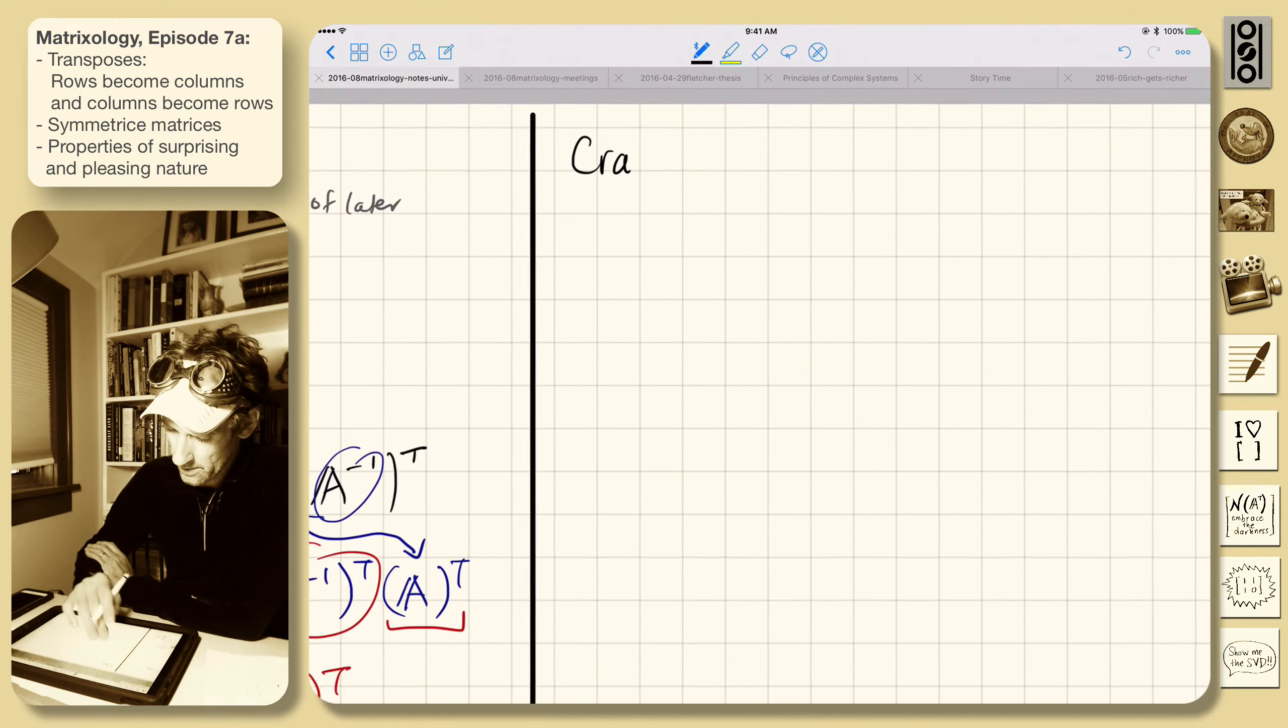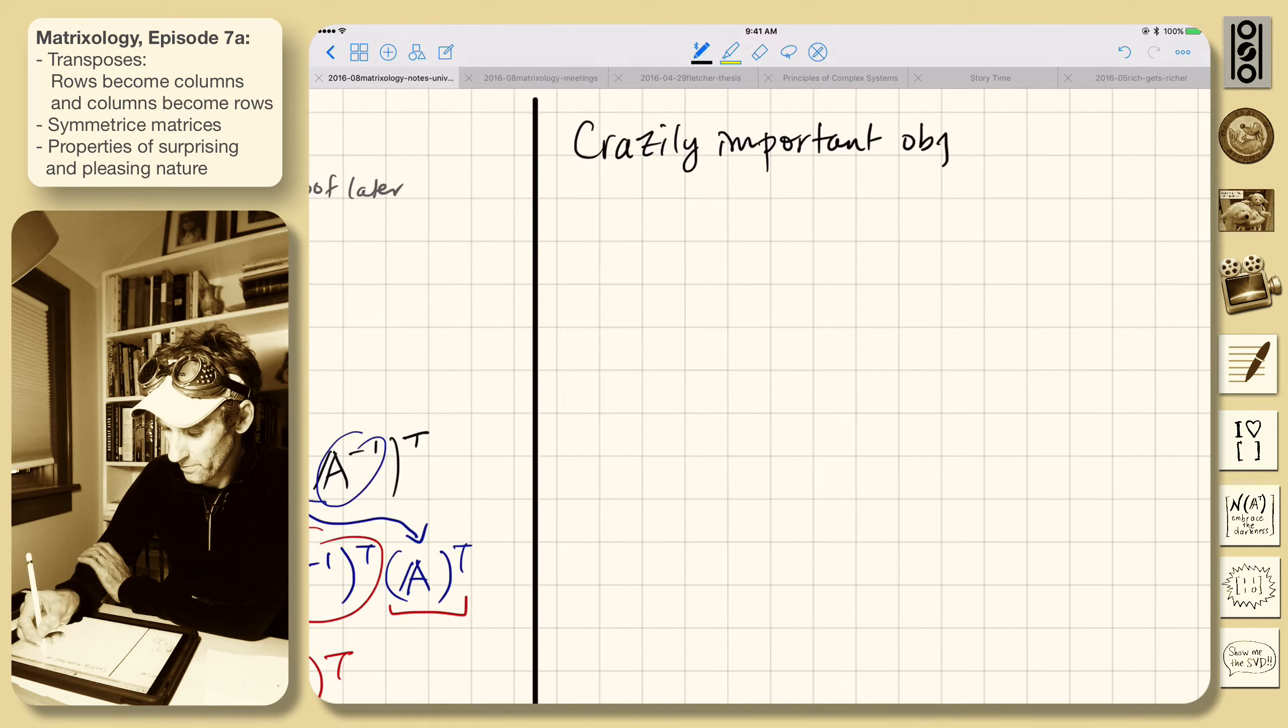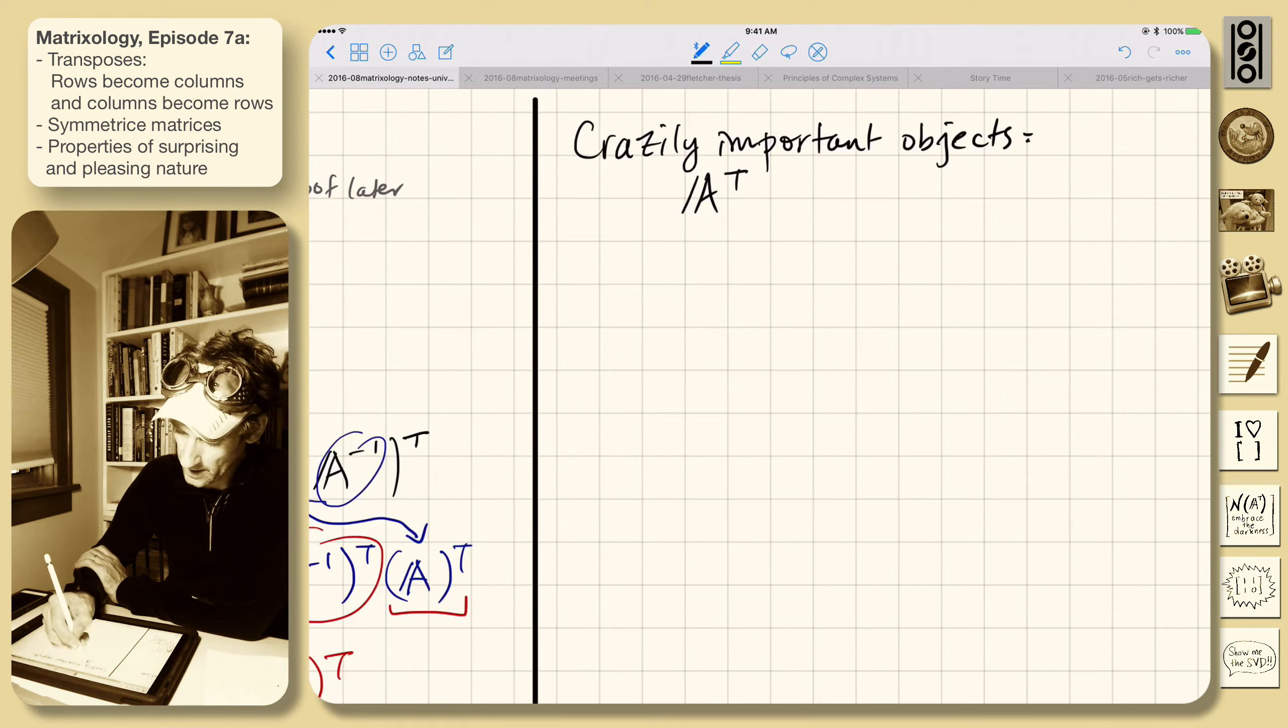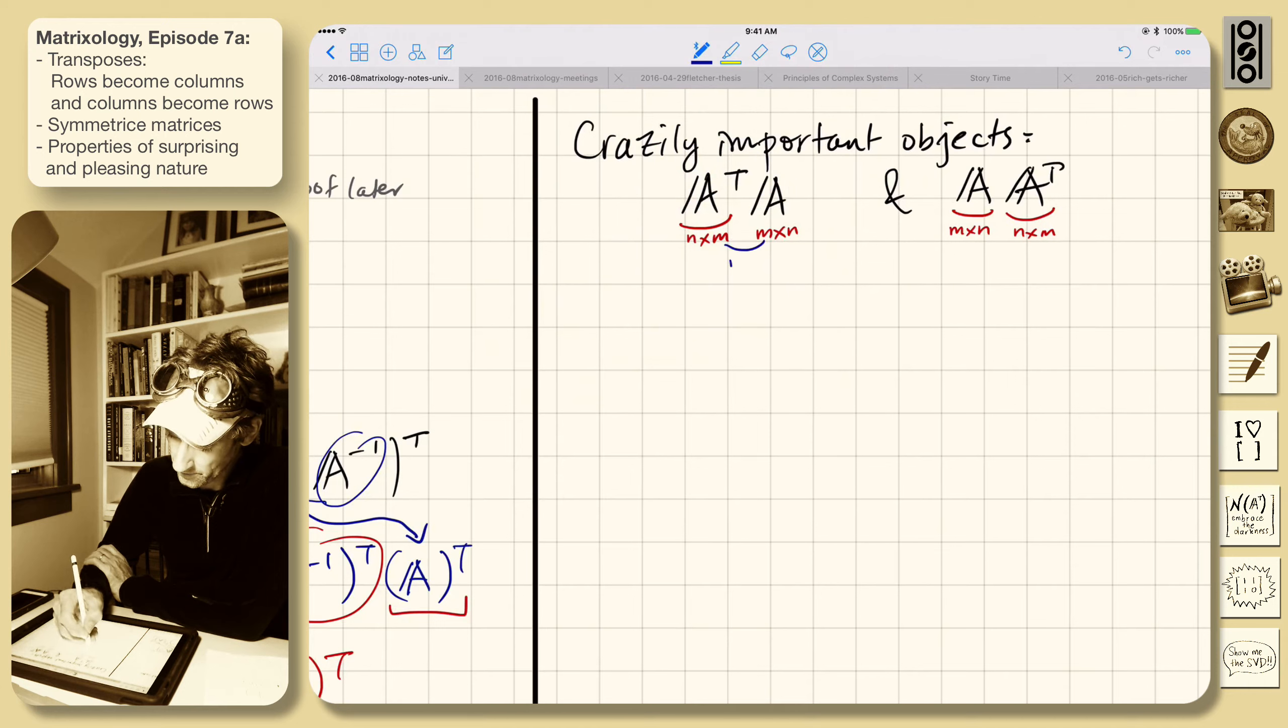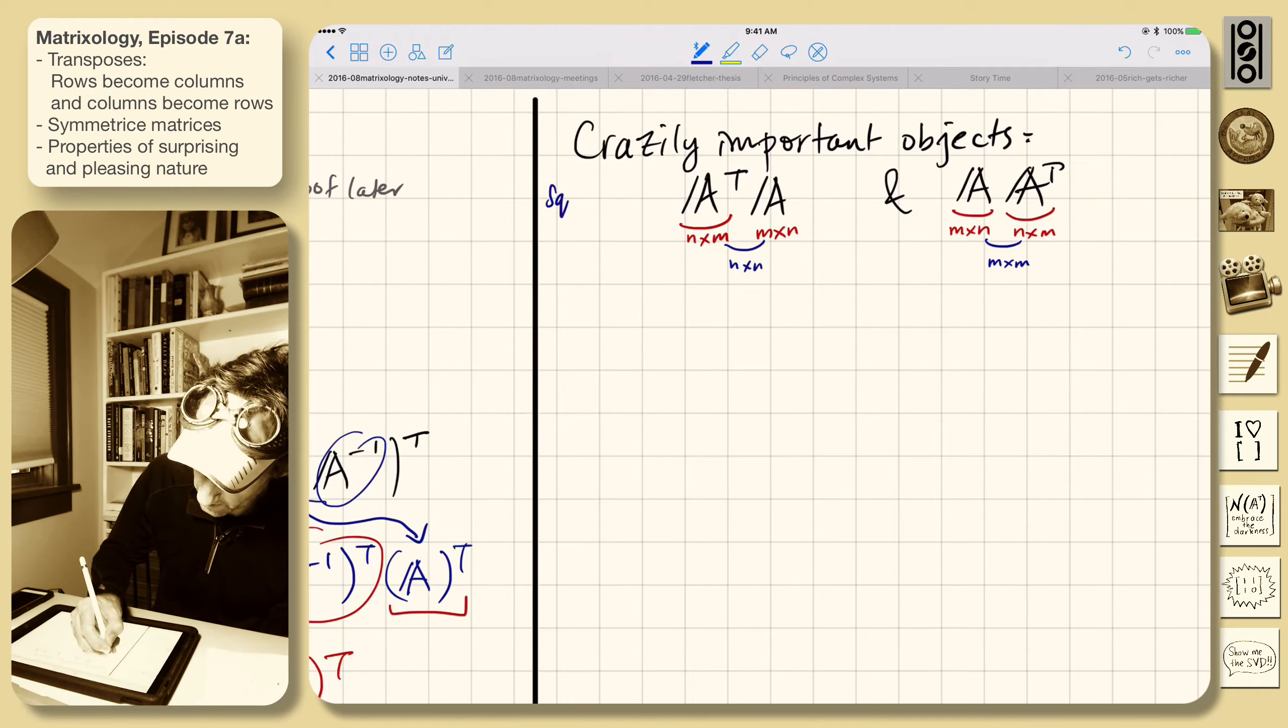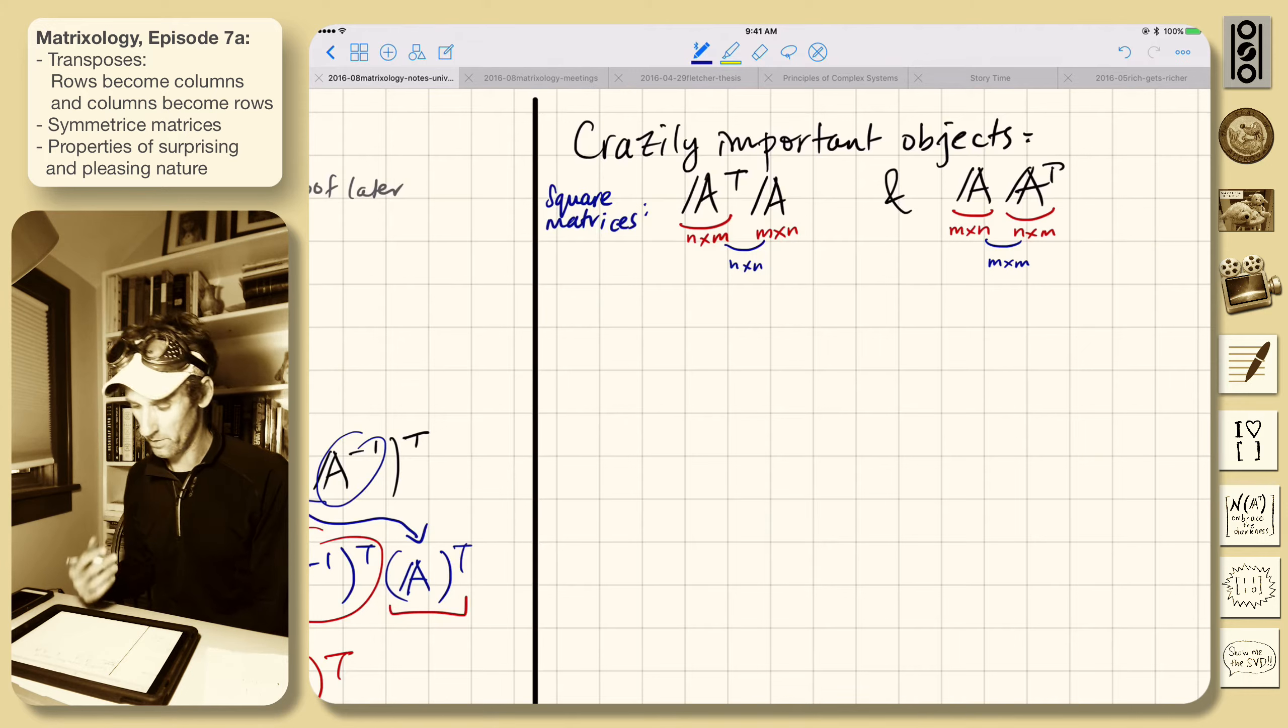So crazily important objects. These will matter a lot. A transpose A and A A transpose. What are these things? So this is M by N, this is an N by M, and here it is again M by N. So the dimensions match up. M by M, so this whole thing is an N by N, and this whole thing is an M by M. So we've taken, these could be rectangular, and we're taking square matrices. So crazily important objects, these are square matrices. Very important. Any rectangular matrix, you can do this. Square matrices, well they will just naturally appear. A doesn't have to be square.